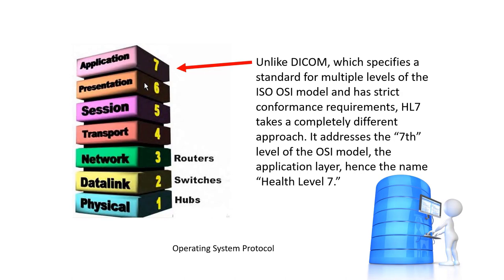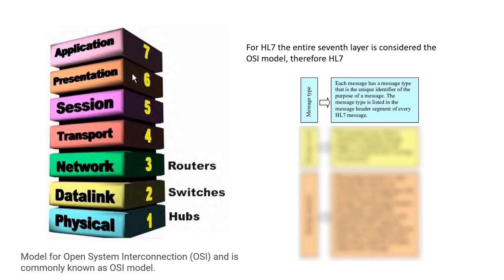HL7 takes a different approach than DICOM in these layers. Unlike DICOM, which specifies a standard for multiple levels of the OSI model and has strict conformance requirements, HL7 approaches this by addressing the seventh level of the OSI model — the application layer — hence the name HL7 Healthcare Language. For HL7, the entire seventh level is considered the OSI model. Therefore, with HL7, we have a message type. Each message has a message type that is a unique identifier of the purpose of the message.